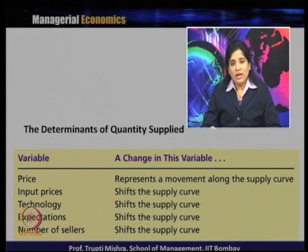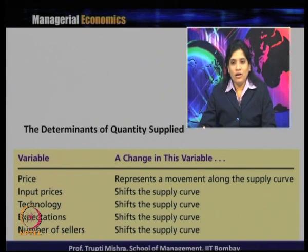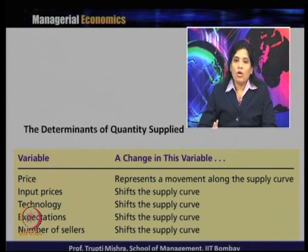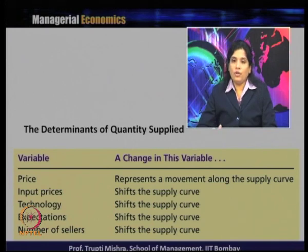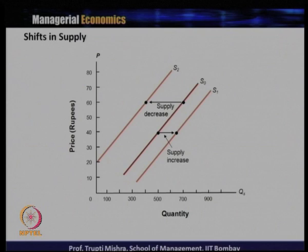The logic is again uniform, like in the case of the demand curve. If there is a change in the price, the change in quantity supplied is just a movement from one point to another point. But if the change is because of a non-price determinant — a change in input price, technology, or any other non-price factor — the supply curve will shift to the right or to the left.